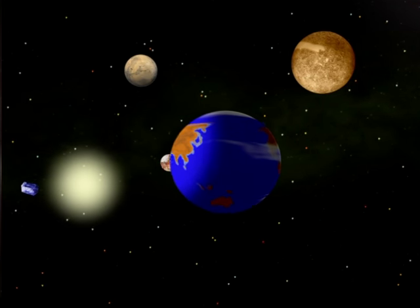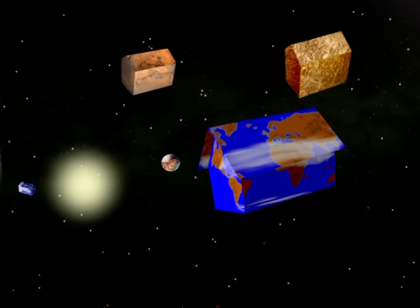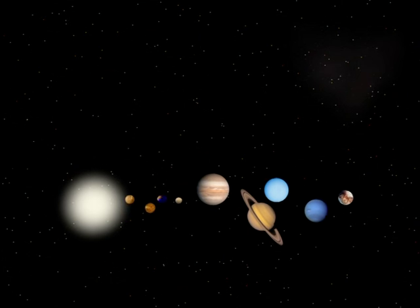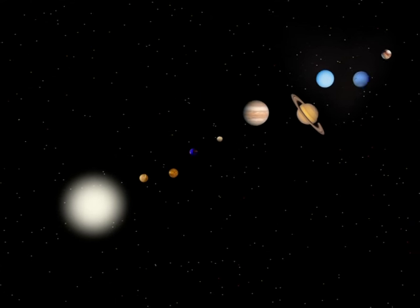If the Earth is our home, the Solar System is the street we live on. It is made up of nine planets which revolve around a great central star, the Sun.